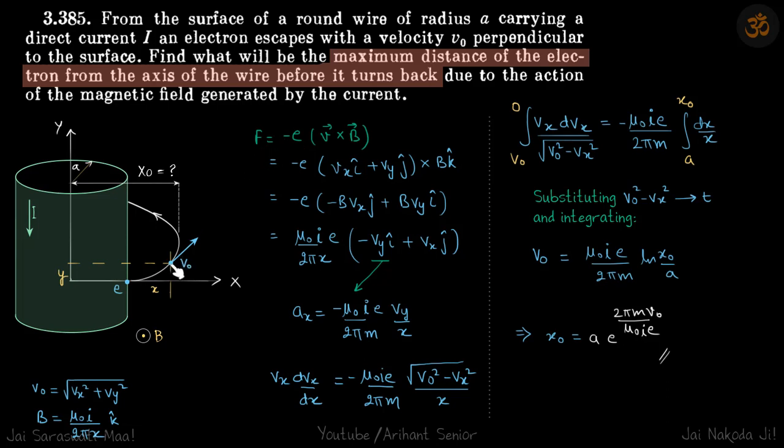Force on this electron will be q into v cross b. So q is minus e. V is vx i cap plus vy j cap, the general velocity at any point x comma y. And b is b k cap. So i cross k is minus j, j cross k is i, and value of b we can put as mu0 i by 2 pi x.